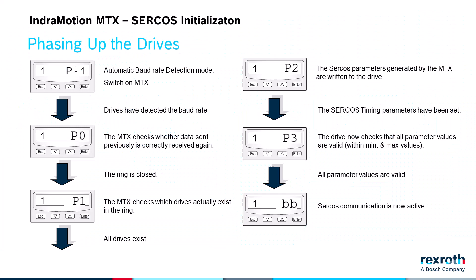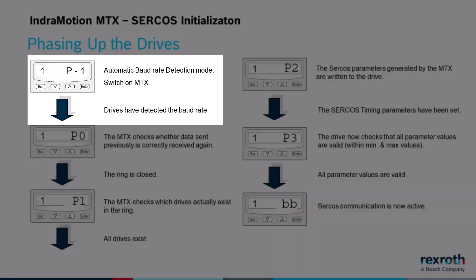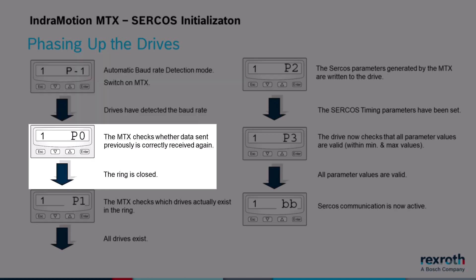First, here is the sequence of how the MTX phases up the drives. After the drives power up, they remain in P-1 until the MTX sets the baud rate. Once the drives have detected the baud rate, they transition to P0. In P0, it verifies that the CIRCOS ring is closed before switching to P1.